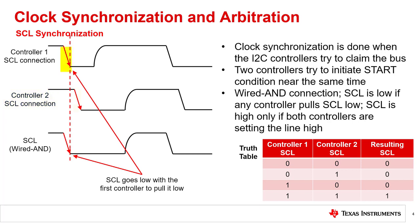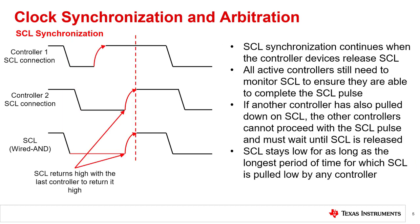Controller 1 device initiates a start condition shortly before controller device 2 does the same. Controller 1 pulls SCL down before controller 2. With the wired AND connection, SCL pulls low as soon as controller 1 pulls down on SCL. After the start condition, controller 1 releases SCL to go high. However, controller 2 is still holding SCL low. Because of the wired AND connection, SCL remains low until controller 2 releases the SCL high.